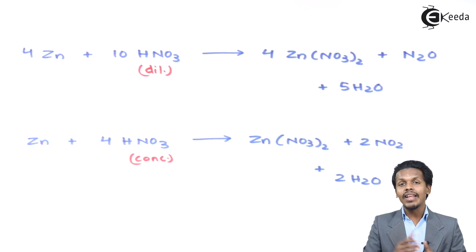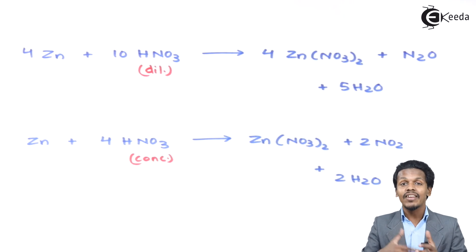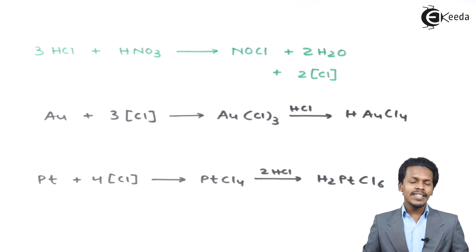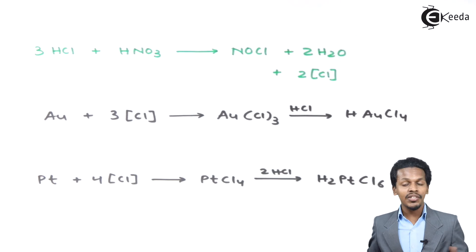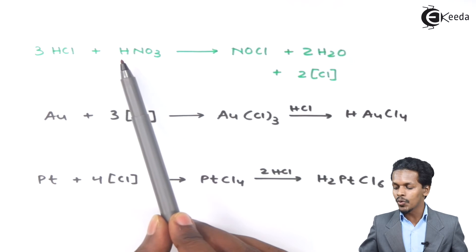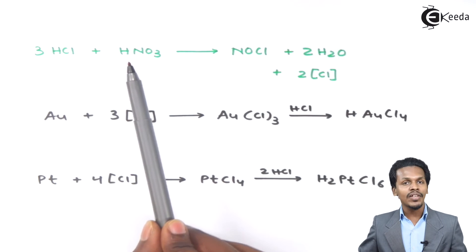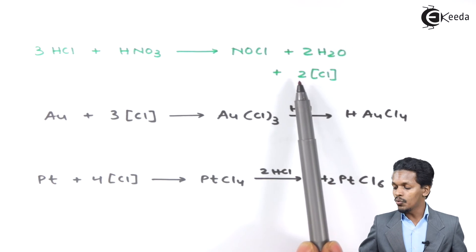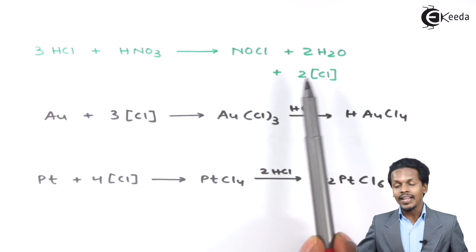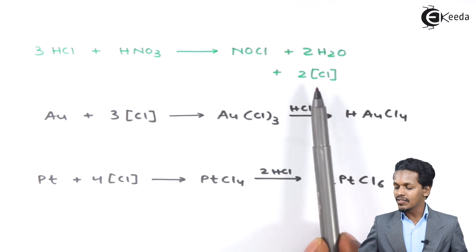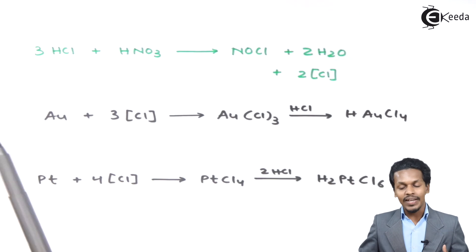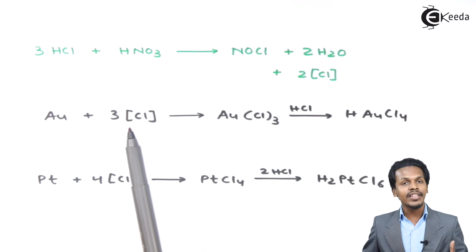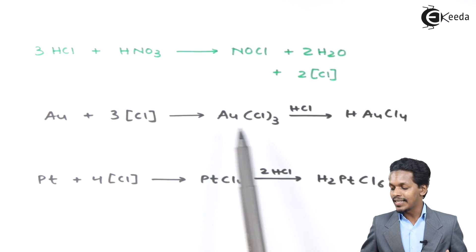Nitric acid is not very reactive to noble metals, but when nitric acid is combined with HCl, it forms aqua regia, which can react with noble metals. Aqua regia is formed by mixing three moles of HCl and one mole of HNO3, producing NOCl along with two moles of H2 and two moles of nascent chlorine. This nascent chlorine is very unstable and reactive. When aqua regia reacts with gold (Au), the gold reacts with three moles of nascent Cl to give AuCl3.